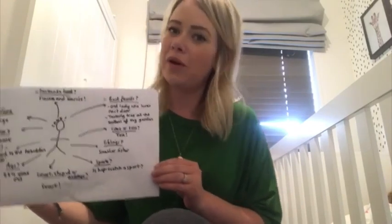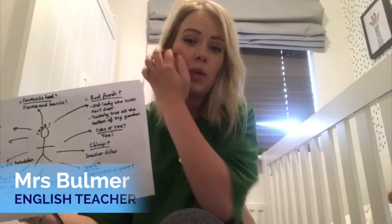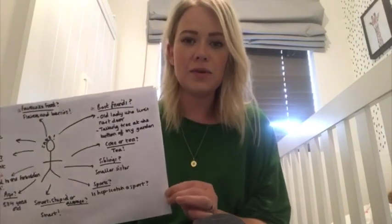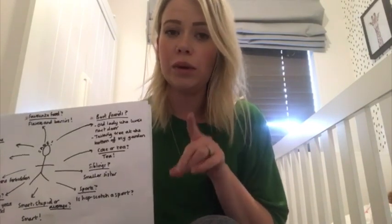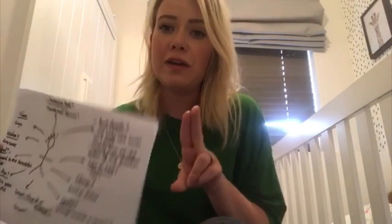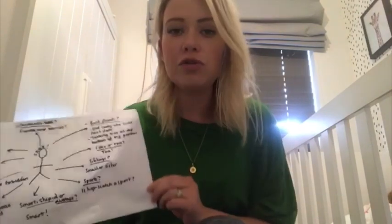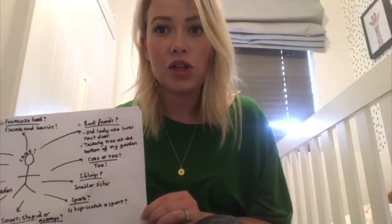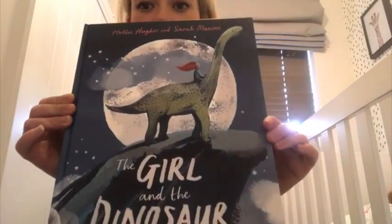Hi again. My name is Mrs Bulmer. I am an English teacher as well as looking after transition and I would like you to meet my character. My character is a pixie called Sage. She has two best friends: an old lady who lives next door and her talking tree at the bottom of her garden. Her favourite foods are flowers and berries, and she is 384 years old. She has a big secret — a password into a forbidden garden — and she's the only person that knows the password. I would choose to put Sage into The Girl and the Dinosaur, and I think she would fit perfectly into this book.